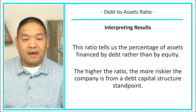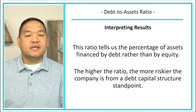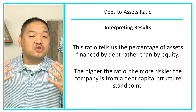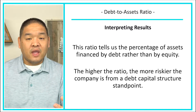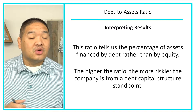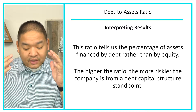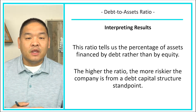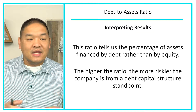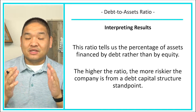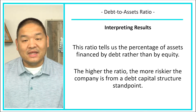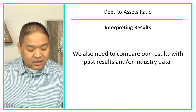The higher the ratio, the riskier the company is from a debt capital structure standpoint. Think about a home: if you only put 2–3% down, you have a huge debt to pay off and losing your job makes it harder. If you put 3% down, your debt to asset ratio might be 97 versus zero with no debt — the 97 is riskier because the bank could call the loan back.